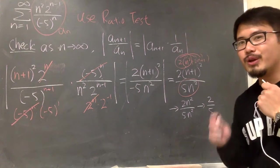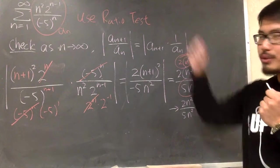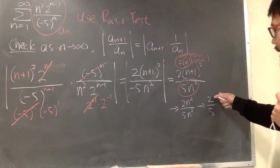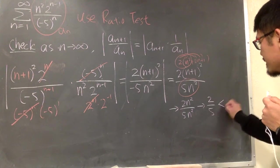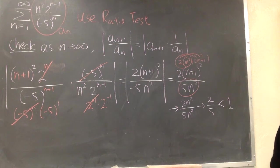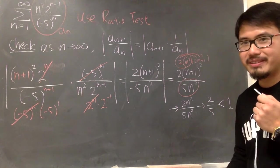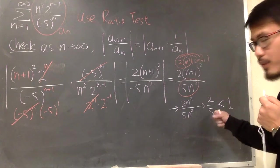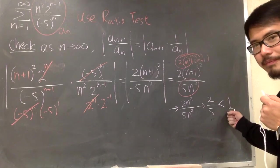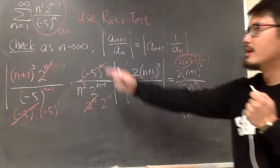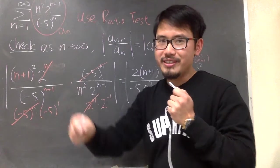This is not enough. You have to tell me. We are doing the ratio test. You have to tell me. This limit, 2 over 5, is less than 1. So now, what's the conclusion? Because the limit right here is less than 1, we know this series converges.